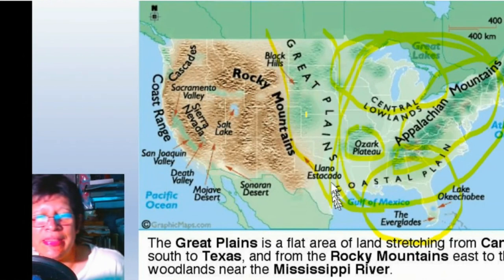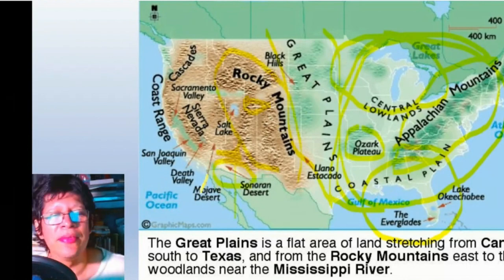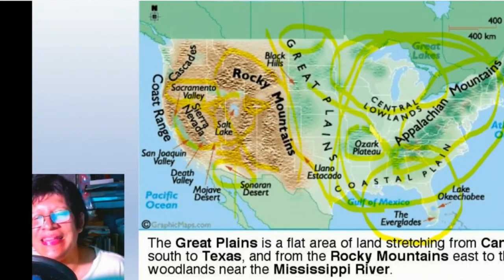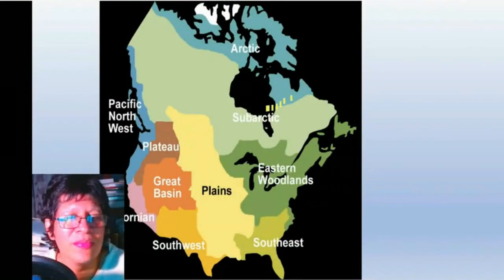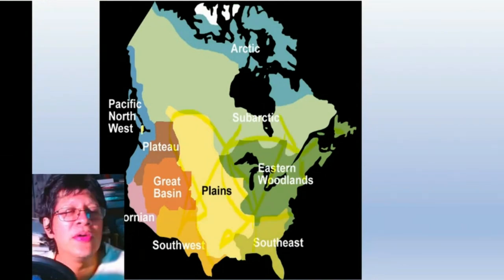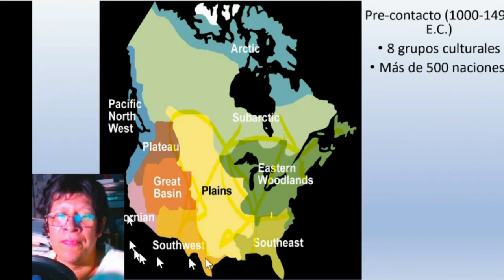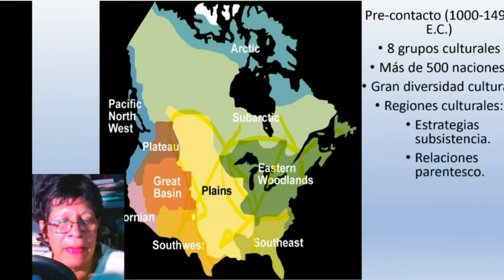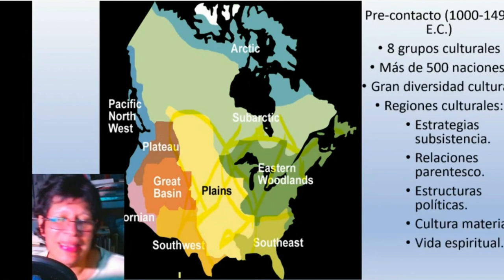An important city came about here — Cahokia, that was the name of the city. I didn't know there was a city here that was so powerful and developed. We tend to think that people who lived in North America were very primitive and that the best civilizations emerged in Mesoamerica — but that is not true.